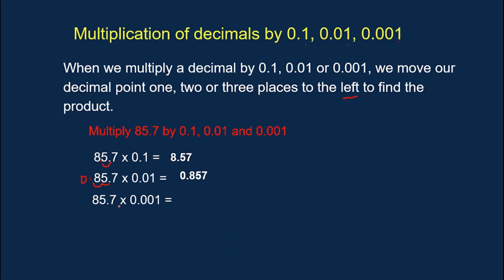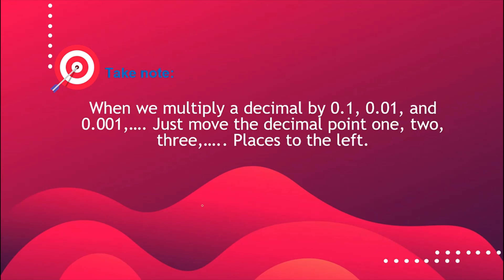And for the last one: 85.7 multiplied by one-thousandth. We have three digits, so we move three places to the left: one, two, and three. All we have to do is affix zeros. Our final answer is 0.0857. We must take note that when we multiply a decimal by one-tenth, one-hundredth, or one-thousandth, just move the decimal point one, two, or three places to the left.